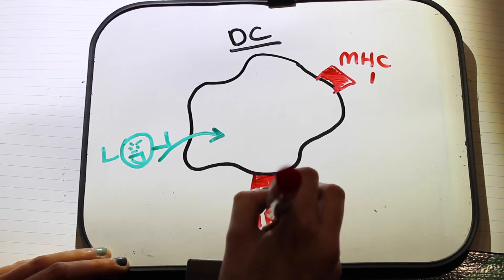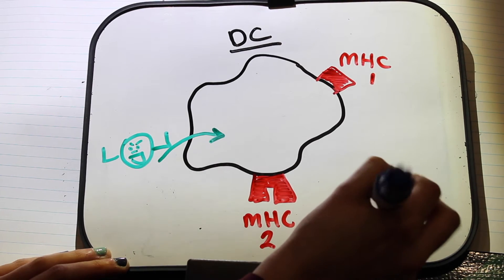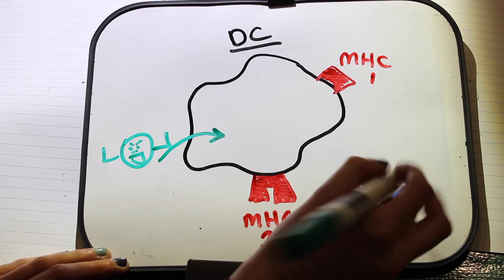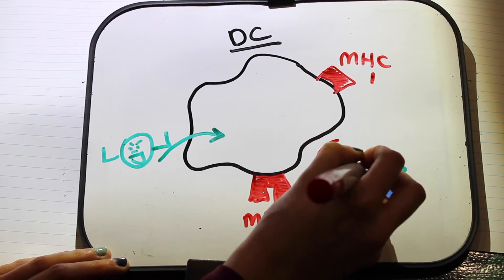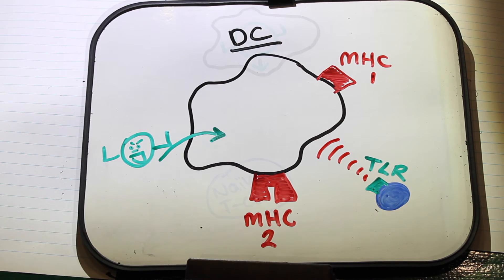Dendritic cells have the ability to express major histocompatibility complexes, MHC1 and MHC2, which are cell surface proteins which interact with T-cell receptors on the naive T-cell. These are created in the endoplasmic reticulum and Golgi apparatus within the dendritic cell. The MHC form depends on the antigen detected.